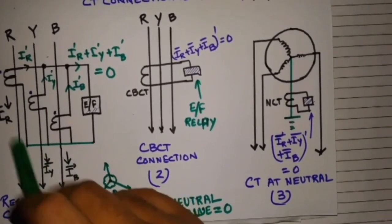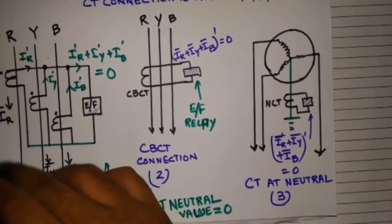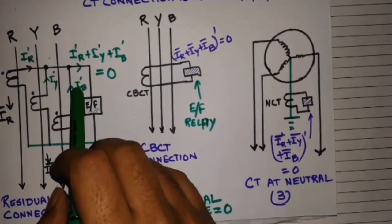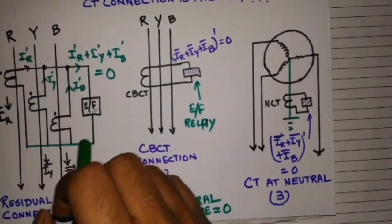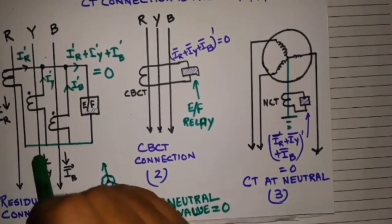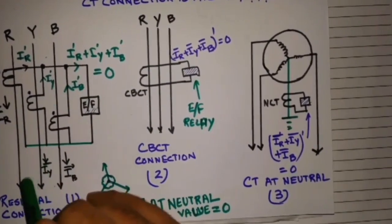But if there is an earth fault, suppose there is an earth fault in IR, so IY and IB will be zero and only IR will have a value. So here IY dash and IB dash will be zero, only IR will flow through the relay to energize.